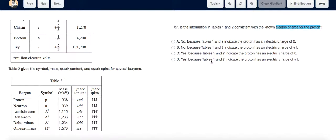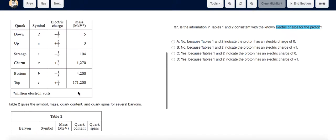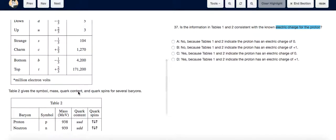For question 37, what we need to know is that protons have an electric charge of positive 1. For the information in Tables 1 and 2 to be consistent with the known electric charge for the proton, the quark content and electric charge needs to add up to plus 1.